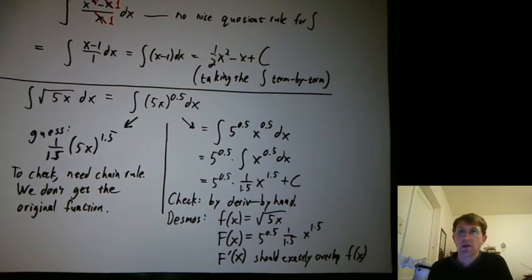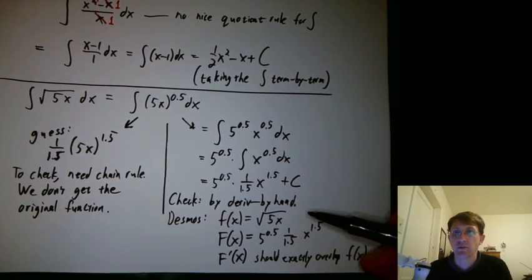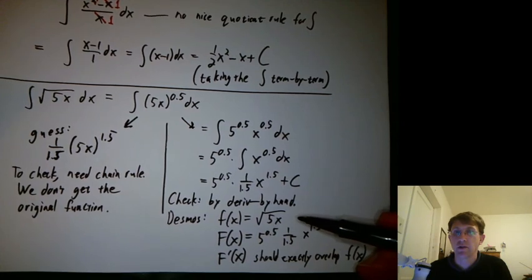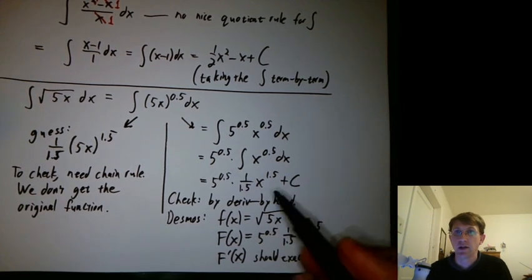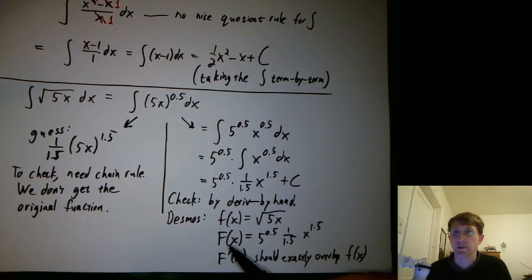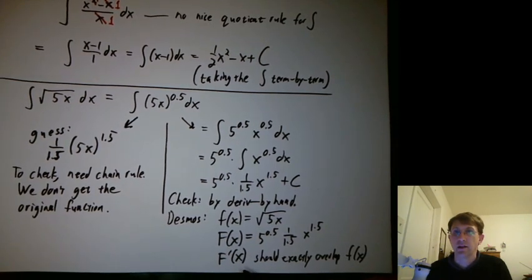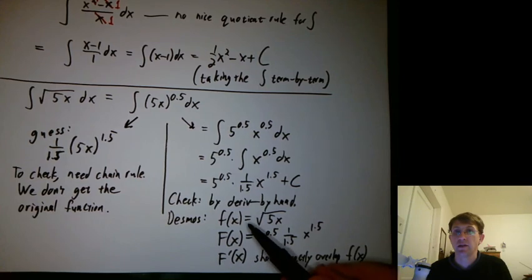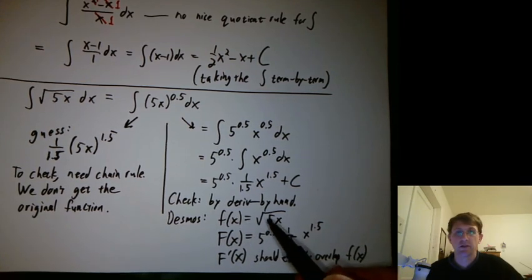So that's one way to check antiderivatives in Desmos. Is type in the original formula, type in your by hand antiderivative, and you have to give it a name like capital F is a good name. And then tell it to take the derivative of capital F. And hopefully you'll see a graph that's exactly your original formula.